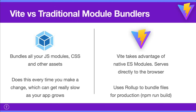You can use ES modules in the browser by adding a script tag with type='module'. Vite takes advantage of this — it's built on top of esbuild, which uses ES modules and serves your code directly to the browser in development. So Vite is essentially a dev server, not a module bundler. When it comes time to bundle files for production with npm run build, it uses Rollup. Vite is very fast because it doesn't have to keep re-bundling everything like webpack or Parcel.